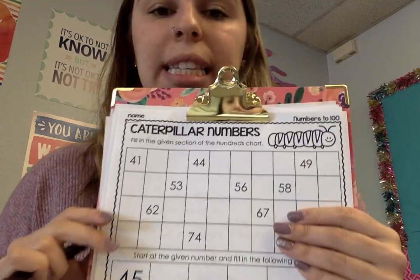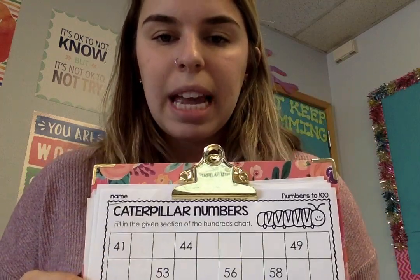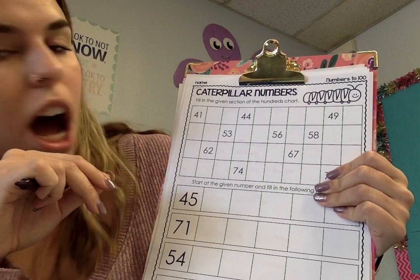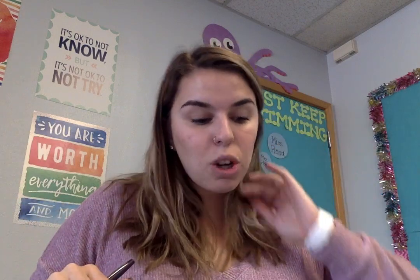On the top it says fill in the given section of the hundreds chart. You've seen hundreds charts before that have numbers 1 through 100 all listed out — we have them posted around the classroom. What we're going to do is fill out part of a hundreds chart, not the whole thing.